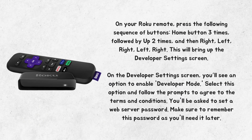On your Roku remote, press the following sequence of buttons: Home button three times, followed by up two times, and then right, left, right, left, right. This will bring up the developer settings screen.